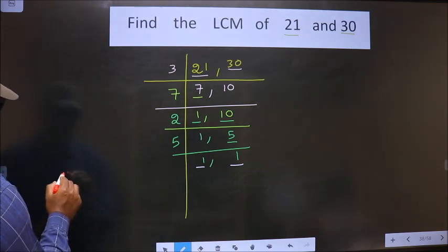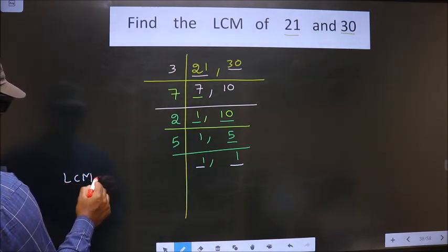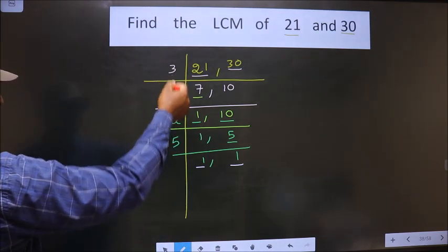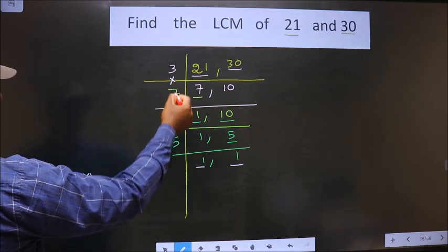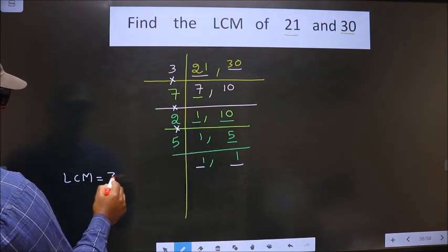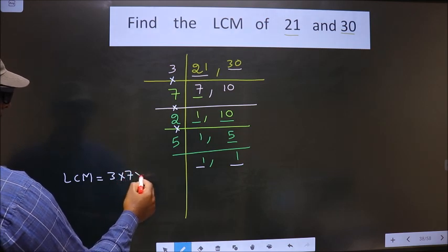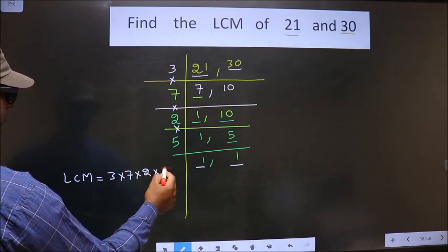So, now our LCM is the product of these numbers: 3 times 7 times 2 times 5.